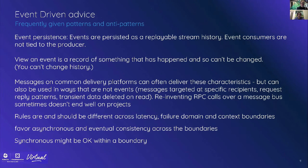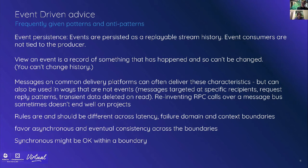Here are a few words of advice with regard to designing an event-driven architecture for edge. When you persist events, view them as a persistence of a replayable stream history. You don't want the event consumers tied to specific producers. View your events as a record of something that has happened — it can't be changed; you can't change history. Messages on common delivery platforms often have certain characteristics, and there are certain things you should and shouldn't do. Rules can be different across latency boundaries, so if you've got a failure domain and a latency domain, you can do things that maybe you should avoid when you're crossing those boundaries. Synchronous might be okay within a boundary, but that's really an anti-pattern when you're crossing a big latency chasm.